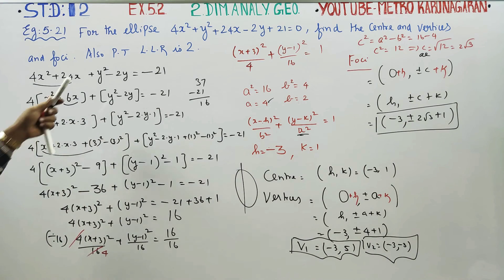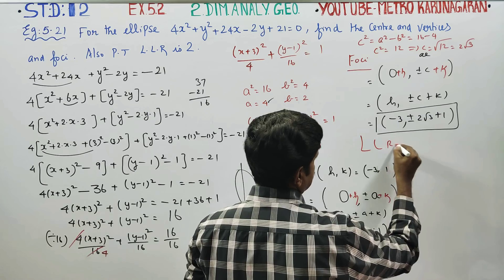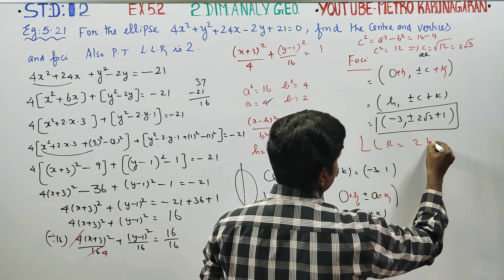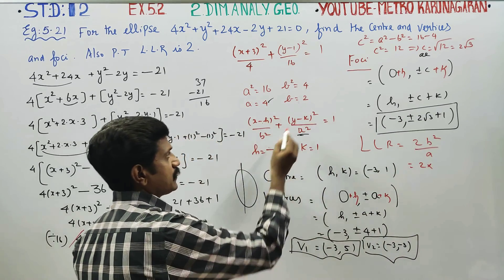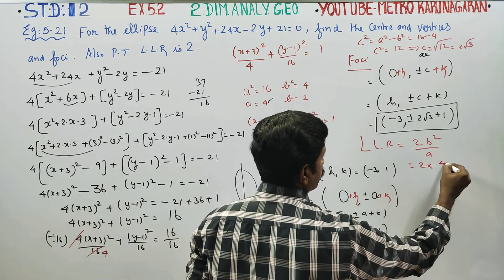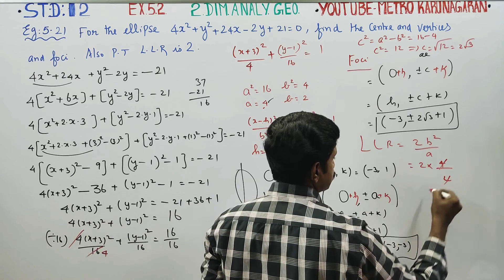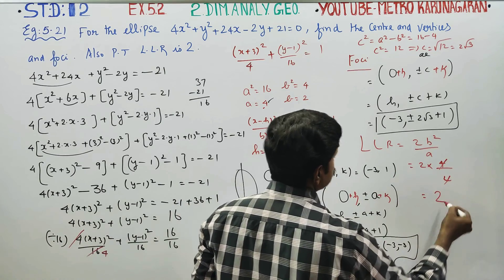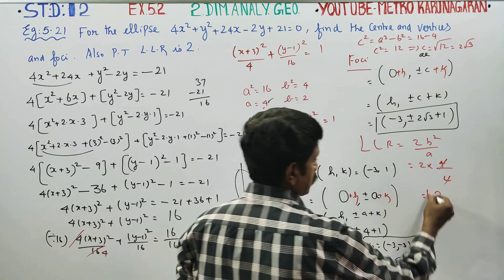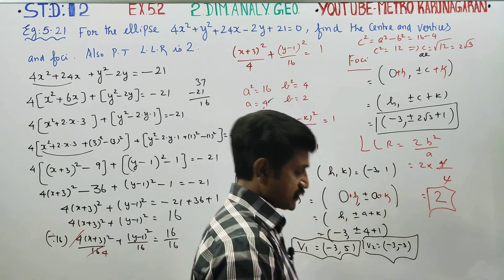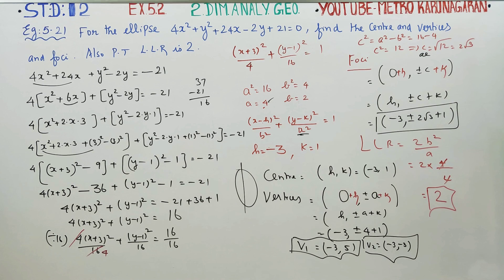Last one: length of latus rectum. The formula is 2b²/a. Here b² = 4 and a = 4, so 2 × 4 / 4 = 2. The length of the latus rectum is 2. That's all. Thank you.